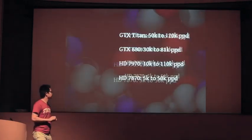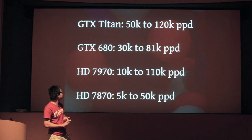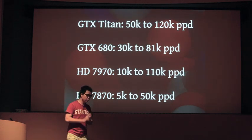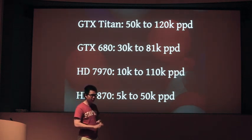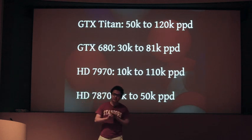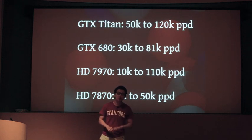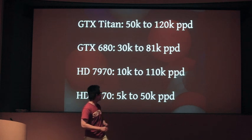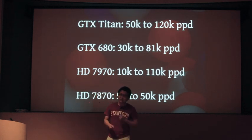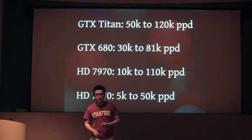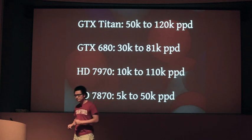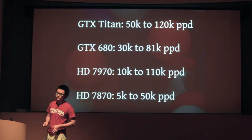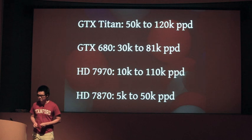Well, let's take a look. On the GTX Titan, we saw it go from 50,000 points per day to over 120,000 points per day. On the GTX 680, we saw it go from 30,000 points per day to over 80,000 points per day. On the AMD HD 7970, we saw it go from 10,000 points per day to over 110,000 points per day. And on the AMD HD 7870, we saw it jump from 5,000 points per day to over 50,000 points per day.